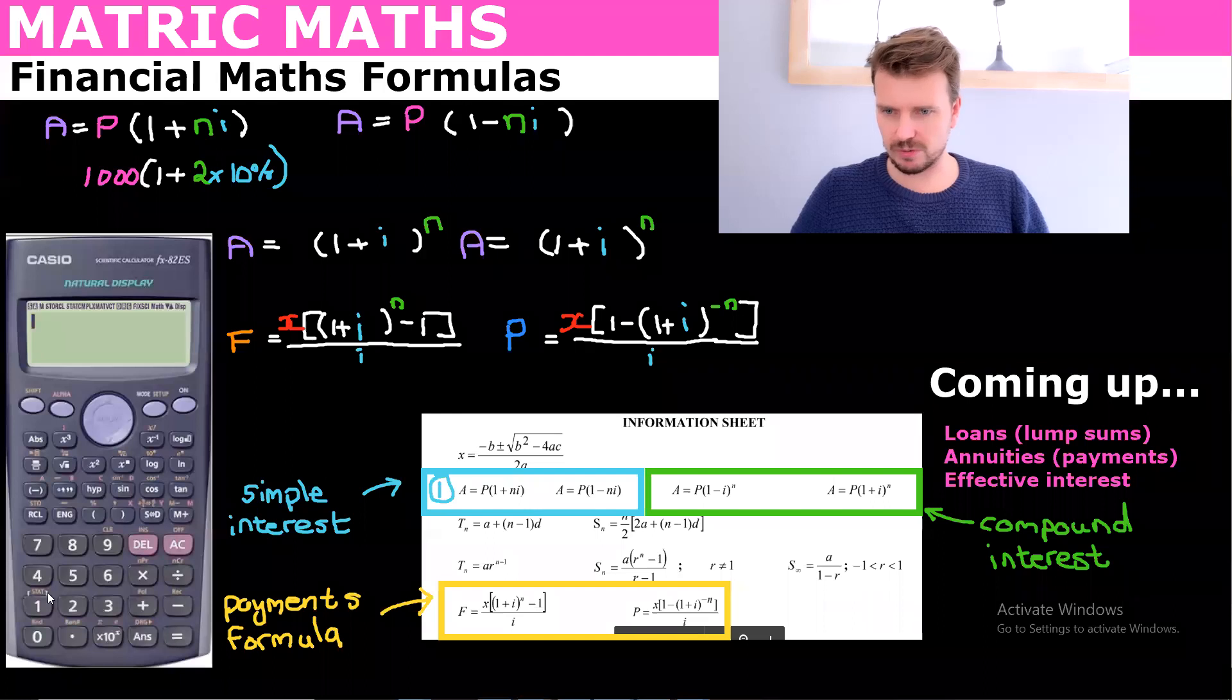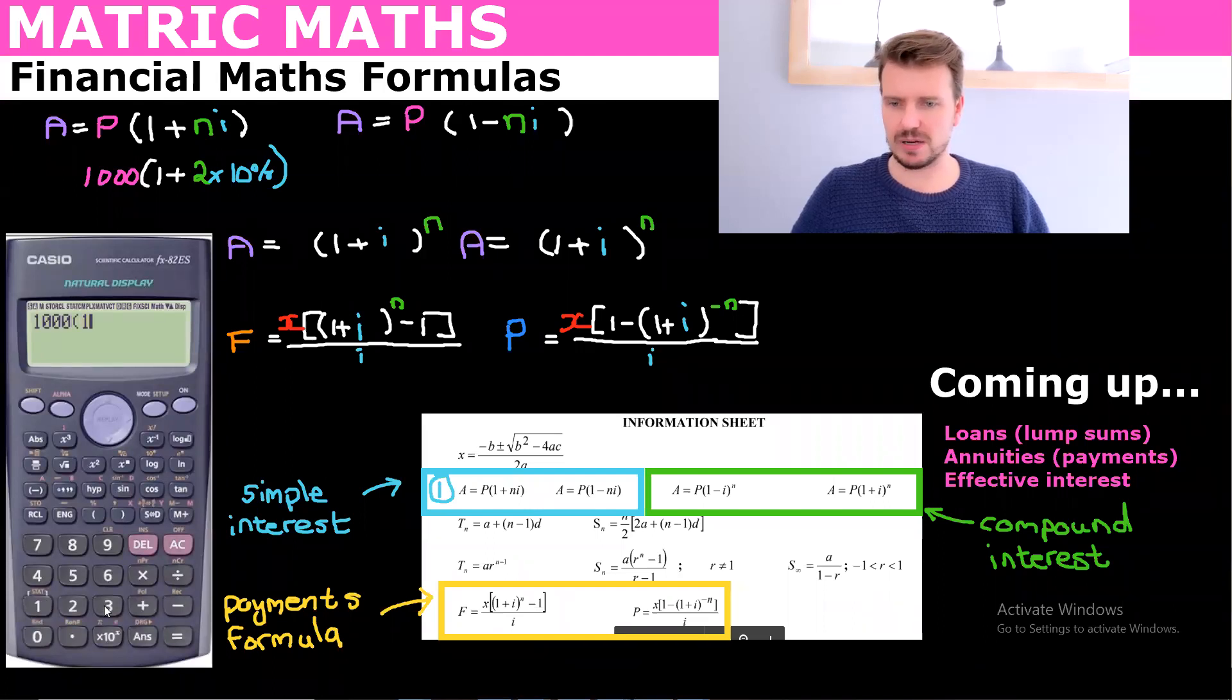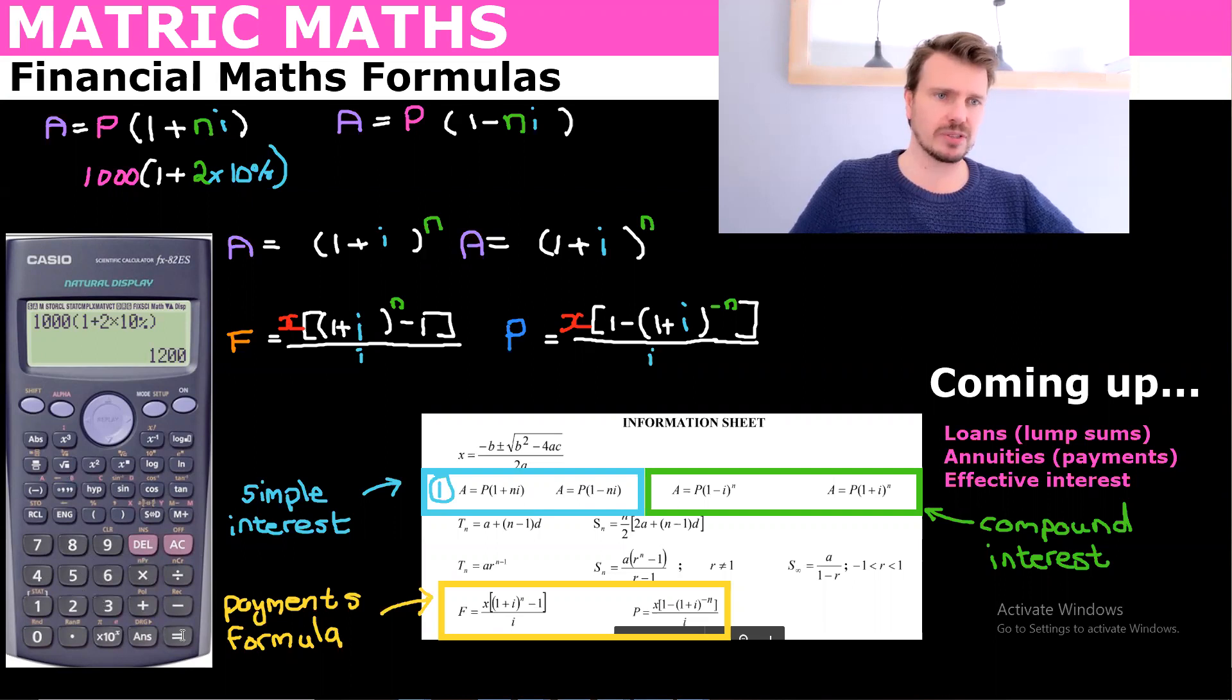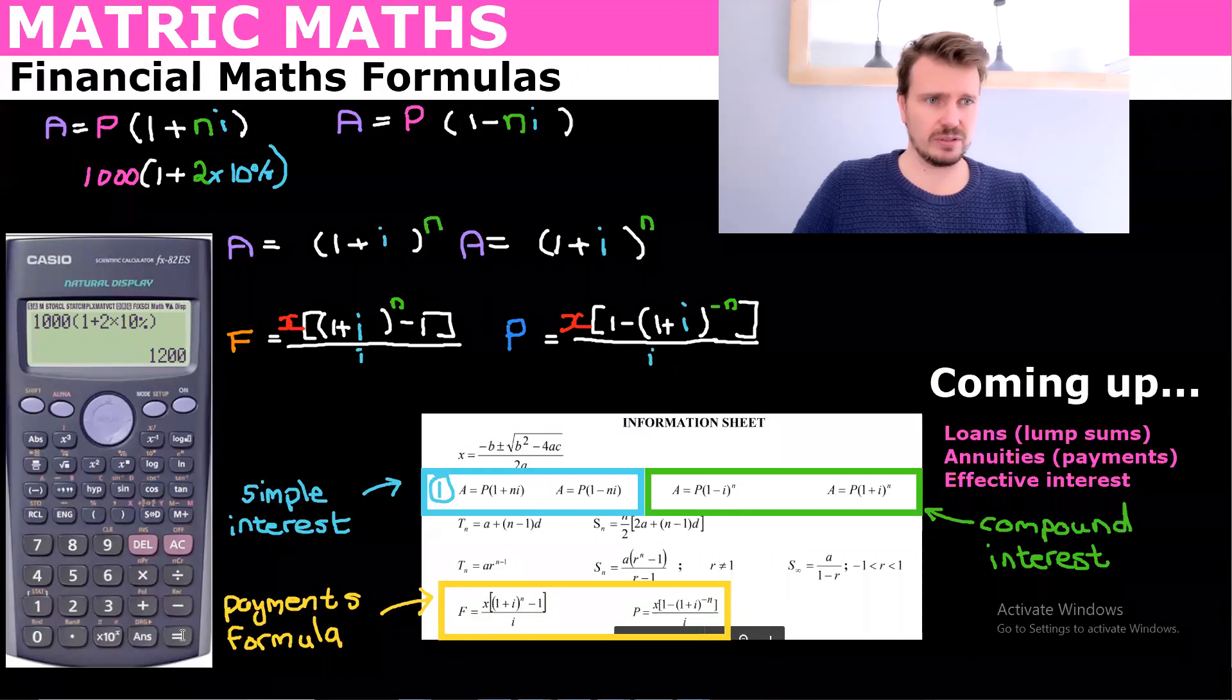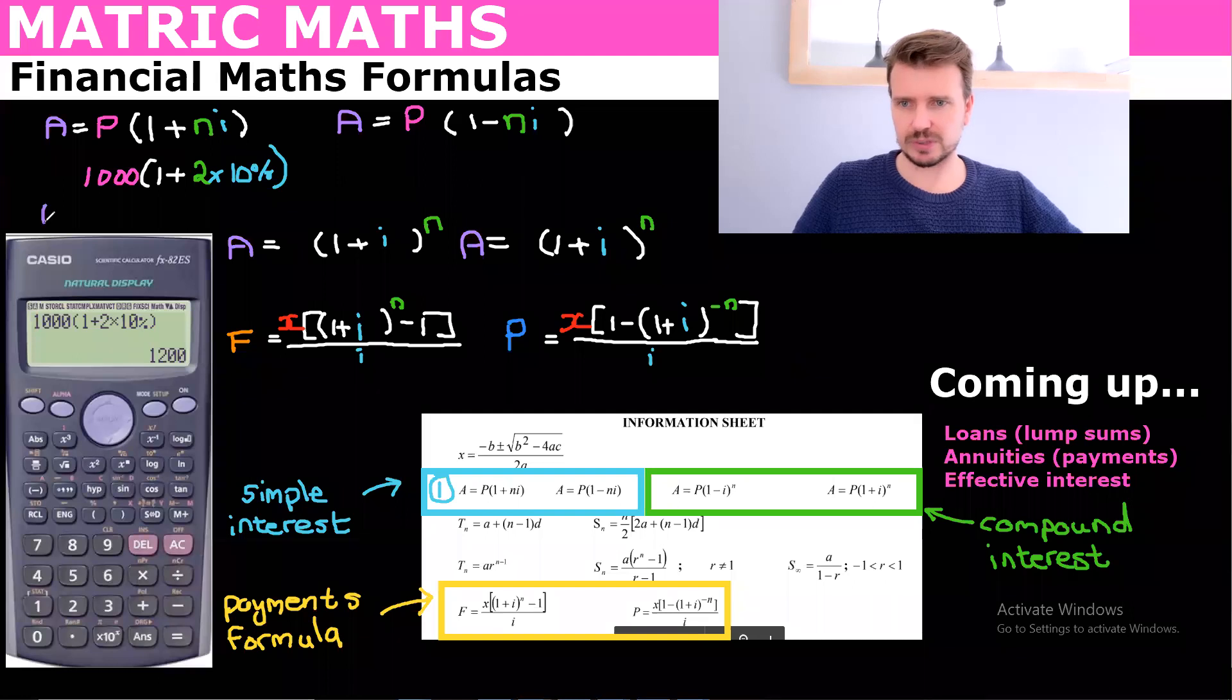So we've got 1000 and then 1 plus 2 times. And this is why you can actually write percentage because you can say 10% and you say shift and there's the percent button there. This is going to ensure we get the correct answer. You can put 0.1, but what I find is sometimes people make a mistake. I say it's 6.7% and then they put 0.67 instead of 0.067. To avoid the mistake like that, you can just put in the percentage. That would then give us an answer A. So A is the amount in future, and that would be 1,200.